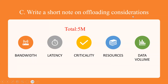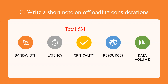Write a short note on off-loading consideration — this is totally for five marks. The various considerations are: bandwidth, latency, criticality, resources, and data volume. List all of these first, then for each parameter write in detail why it is a consideration — why bandwidth, why latency, why resources, why data volume. All those explanations together will get you five marks.